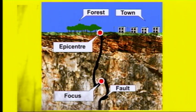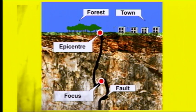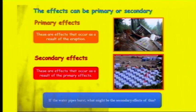Looking at this diagram, you can see the focus in the crust and the epicentre directly above it on the earth's surface. Even though the epicentre is closest to the focus, we would expect there to be more damage in the town because there is more building there — it looks like more of an urban area — and generally the deaths from earthquakes are caused by buildings falling.